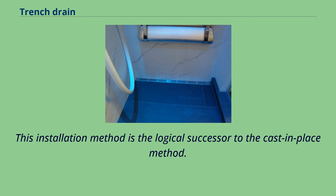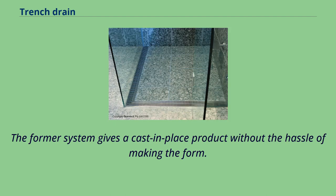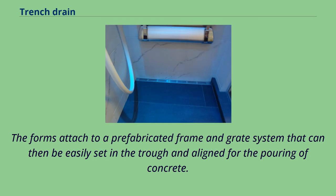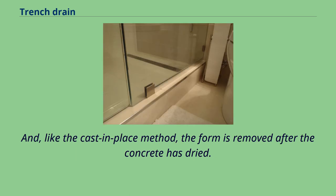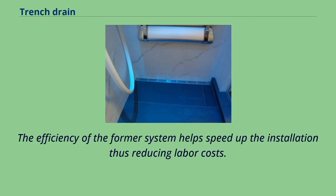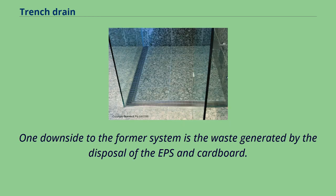The former system is the logical successor to the cast-in-place method. It gives a cast-in-place product without the hassle of making the form. Rather than wood, the forms are made of lightweight expanded polystyrene or cardboard. The forms attach to a prefabricated frame and grate system that can be easily set in the trough and aligned for the pouring of concrete. Like the cast-in-place method, the form is removed after the concrete has dried. The real savings with the former method is in time required for making and setting the form, helping speed up installation and reducing labor costs. One downside is the waste generated by the disposal of the EPS and cardboard.